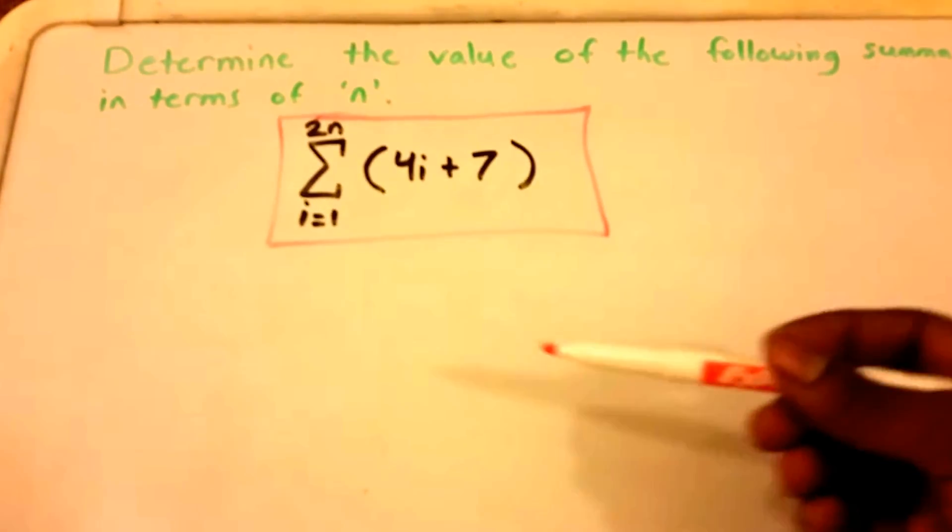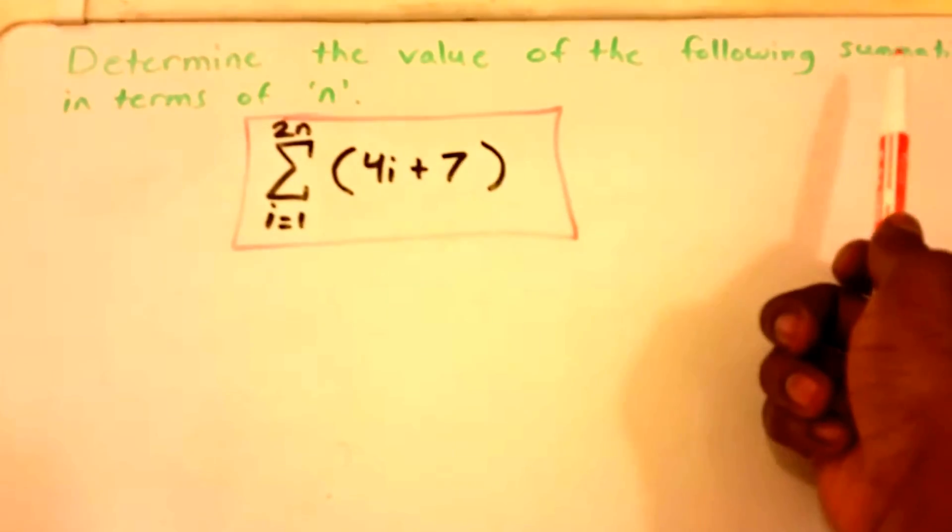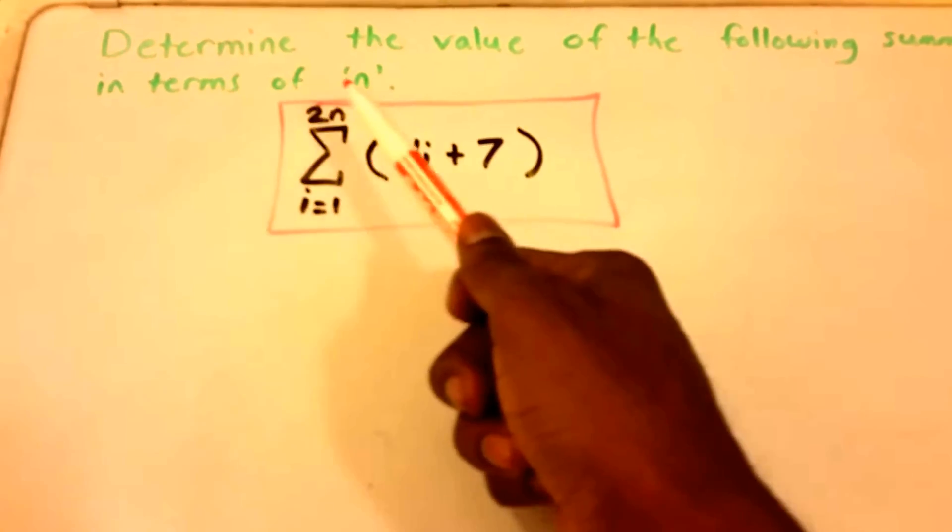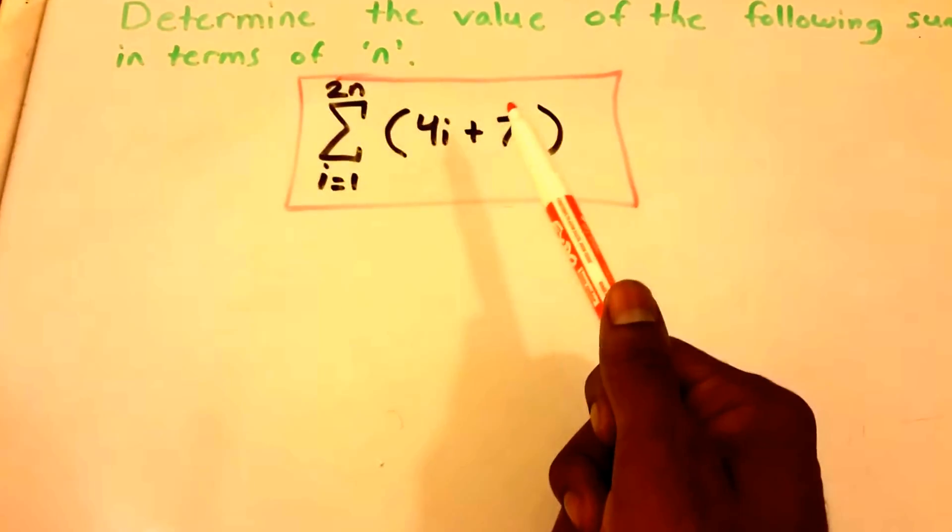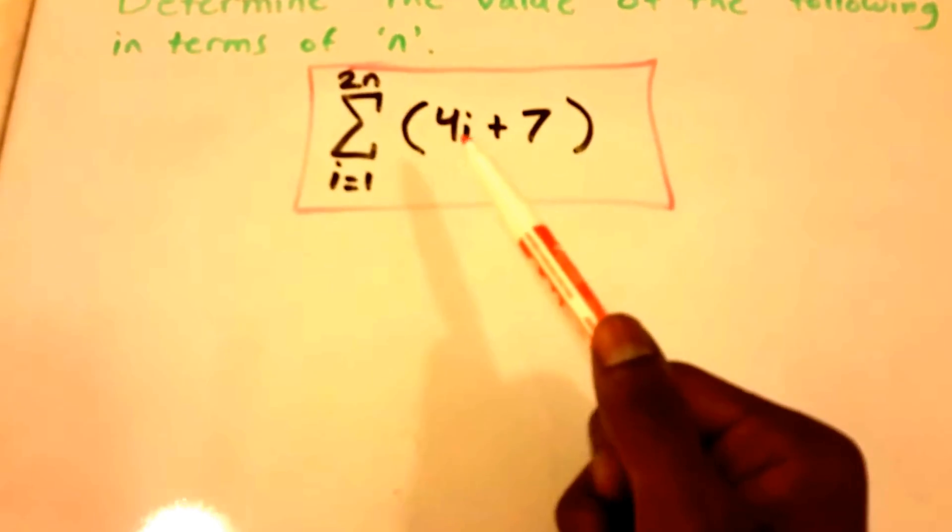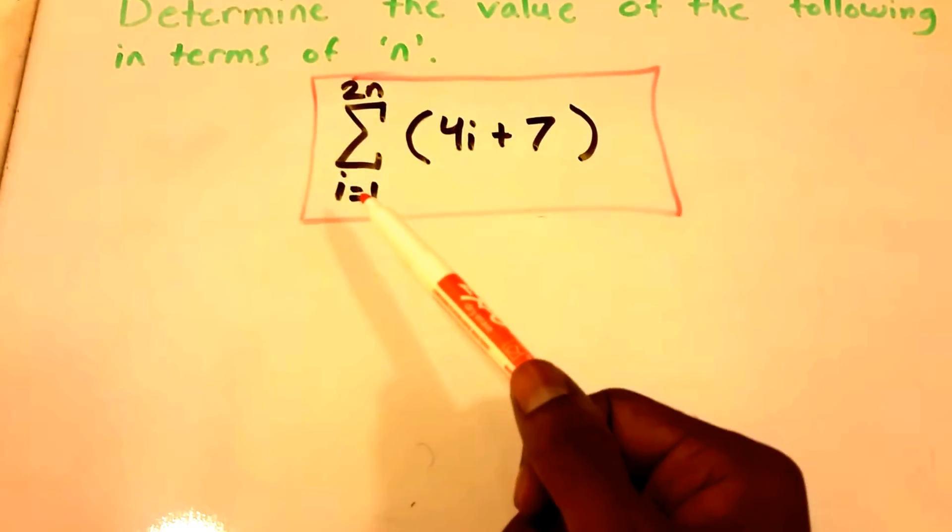Hey guys, welcome to this video on summations. So here we want to determine the value of the following summation in terms of n. In red here I have our summation equation, and it basically runs from i equals 1 all the way to 2 times n of 4 times i plus 7.